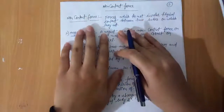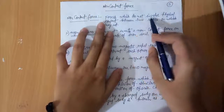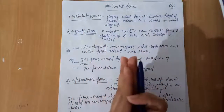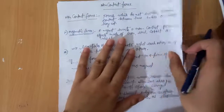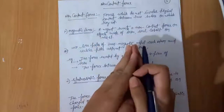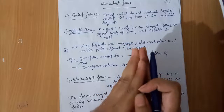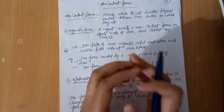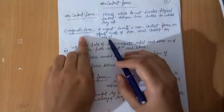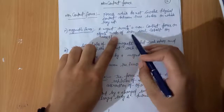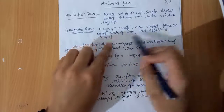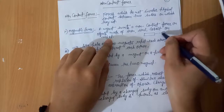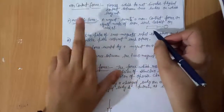Non-contact force means forces which do not involve physical contact between two bodies on which they act. Force always acts between pairs of objects. Non-contact force acts between objects that are not in contact. Magnetic force: a magnet exerts a non-contact force on objects made of iron, steel, cobalt, and nickel. For example, this magnet attracts this iron piece — this force is called magnetic force.